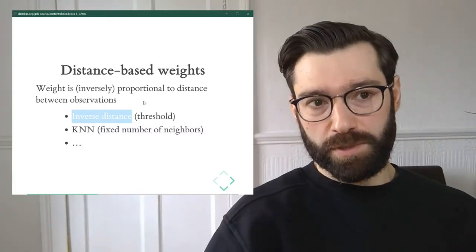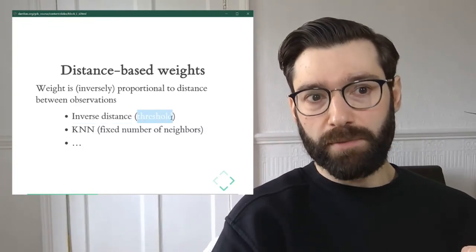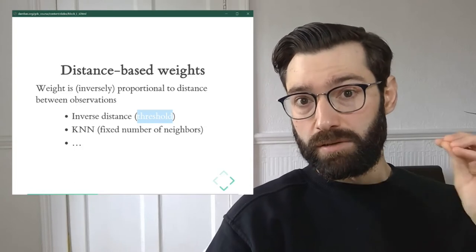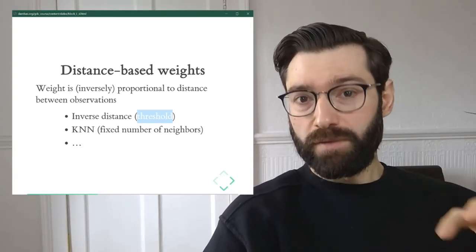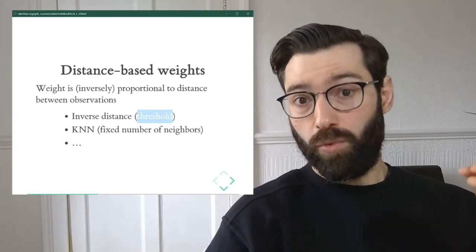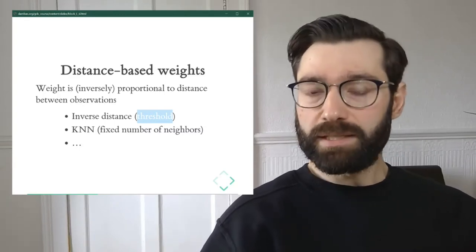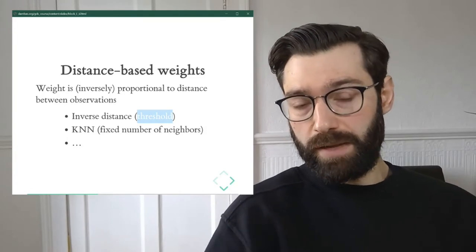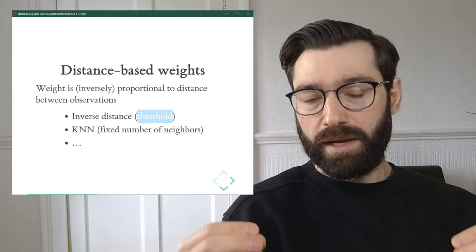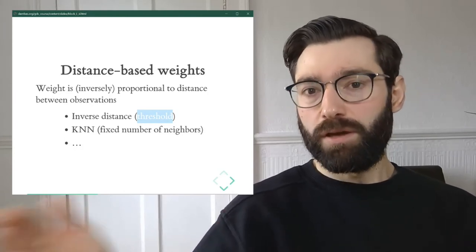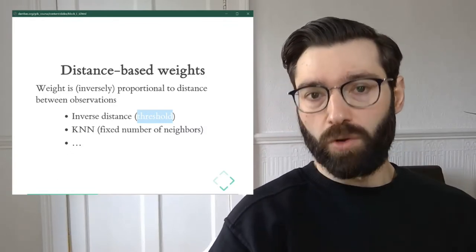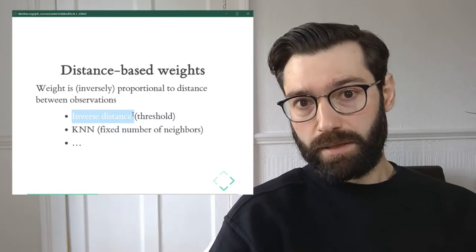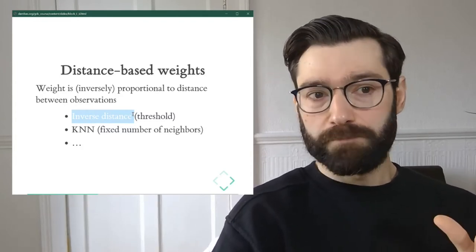We can also apply a threshold — for example, everyone within 500 meters of an observation is considered a neighbor. For those within 500 meters, we give a weight of one and everyone else gets a weight of zero, creating a binary matrix as in the contiguity case. Alternatively, if you're within the distance threshold you get a weight inversely proportional to the distance; if you're beyond it, you get a weight of zero. The key point is that we're using distance directly to establish the neighborhood relationship.